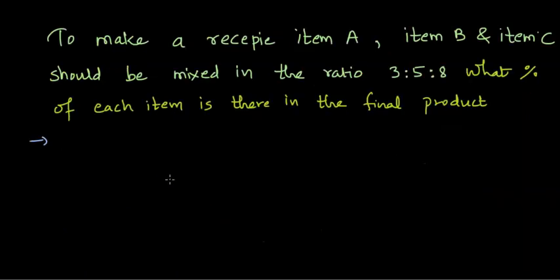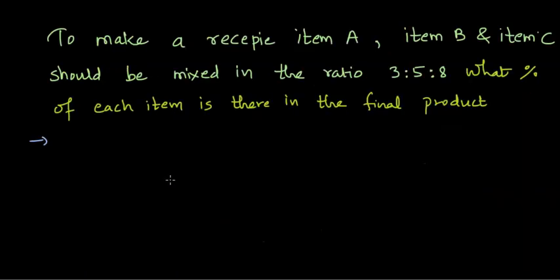Let's solve another problem. Now here goes another problem: To make a recipe, item A, item B, and item C should be mixed in the ratio 3 is to 5 is to 8. What percentage of each item is there in the final product? I am not good at cooking so I just assumed some recipe and chose 3 items, sorry about that.